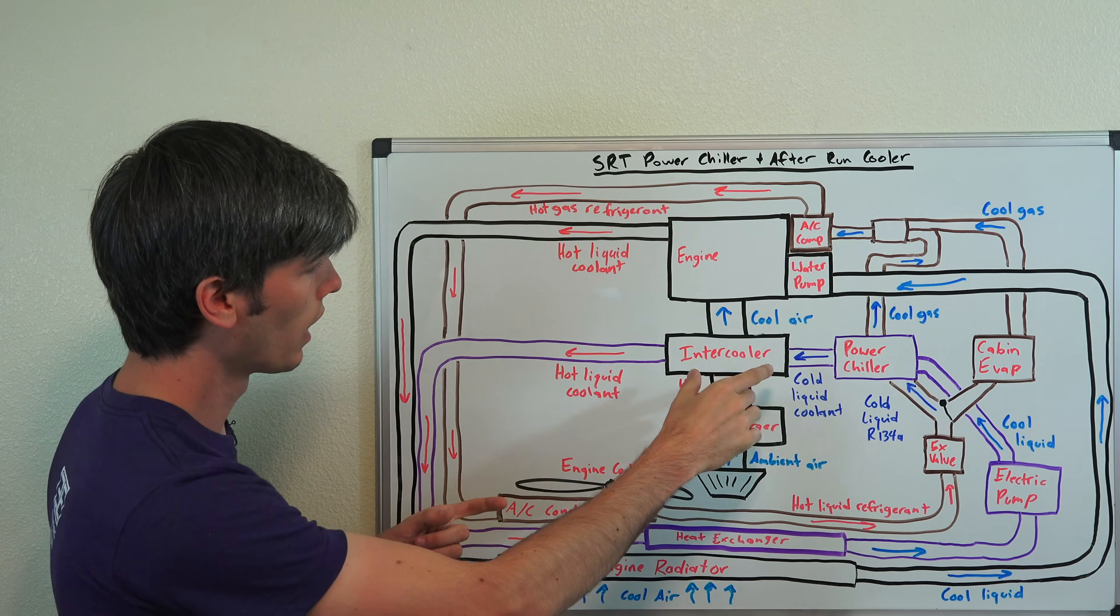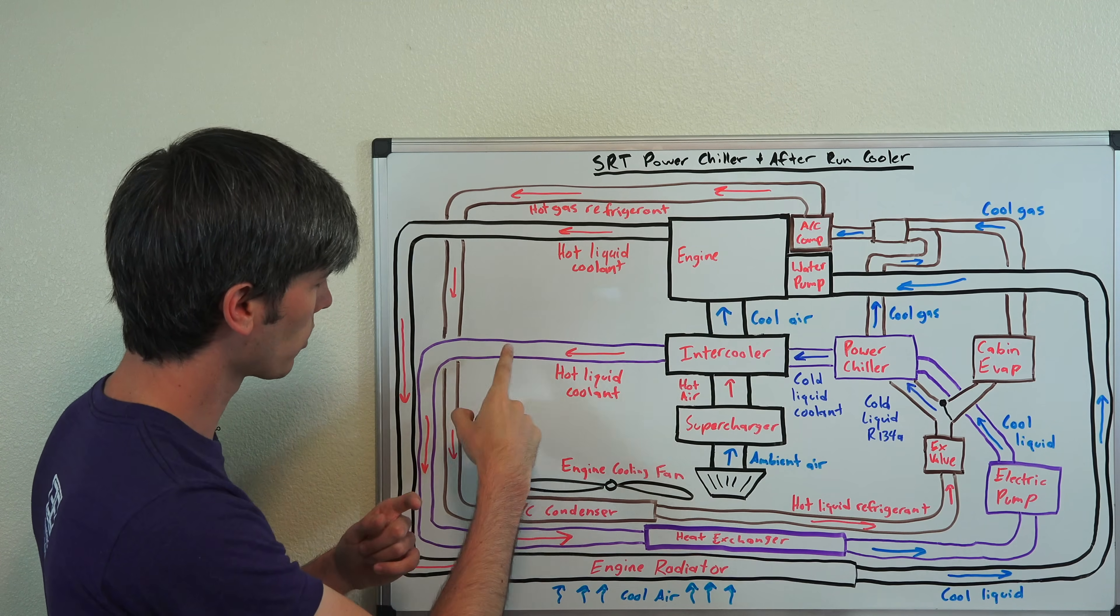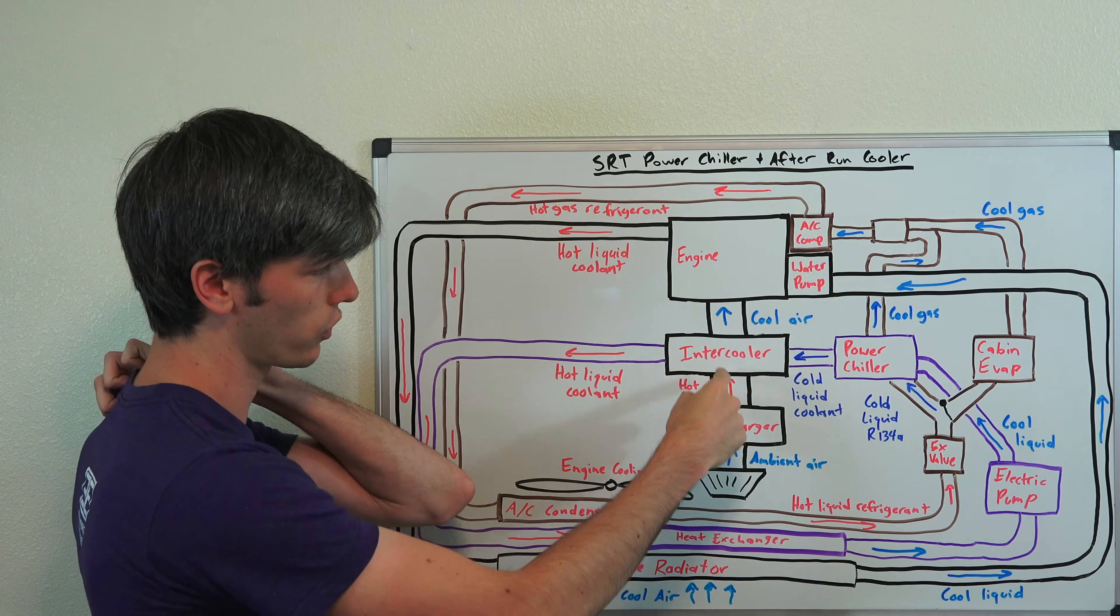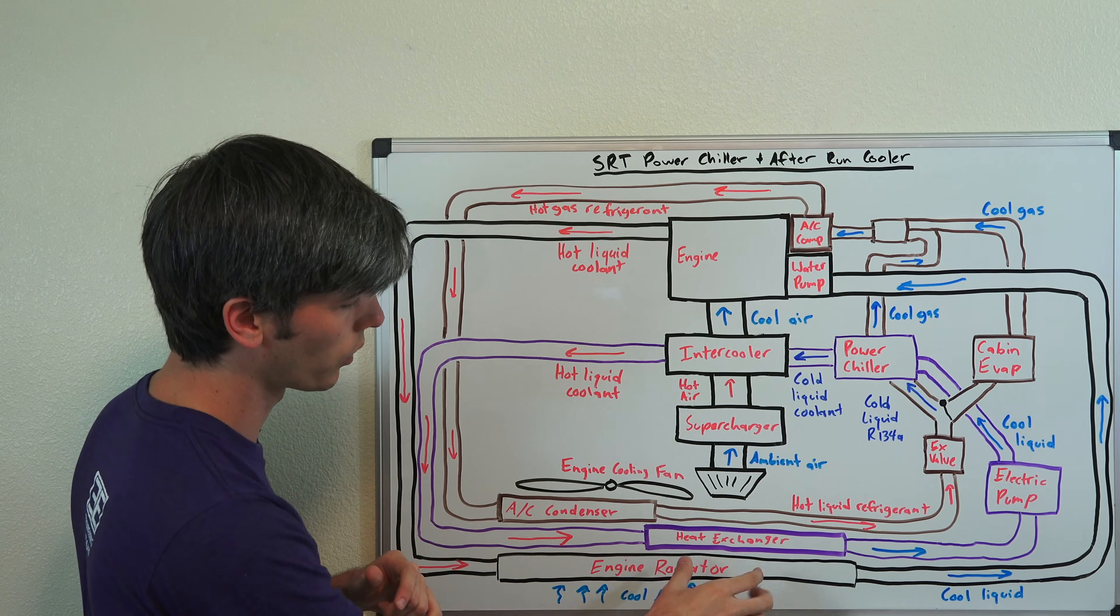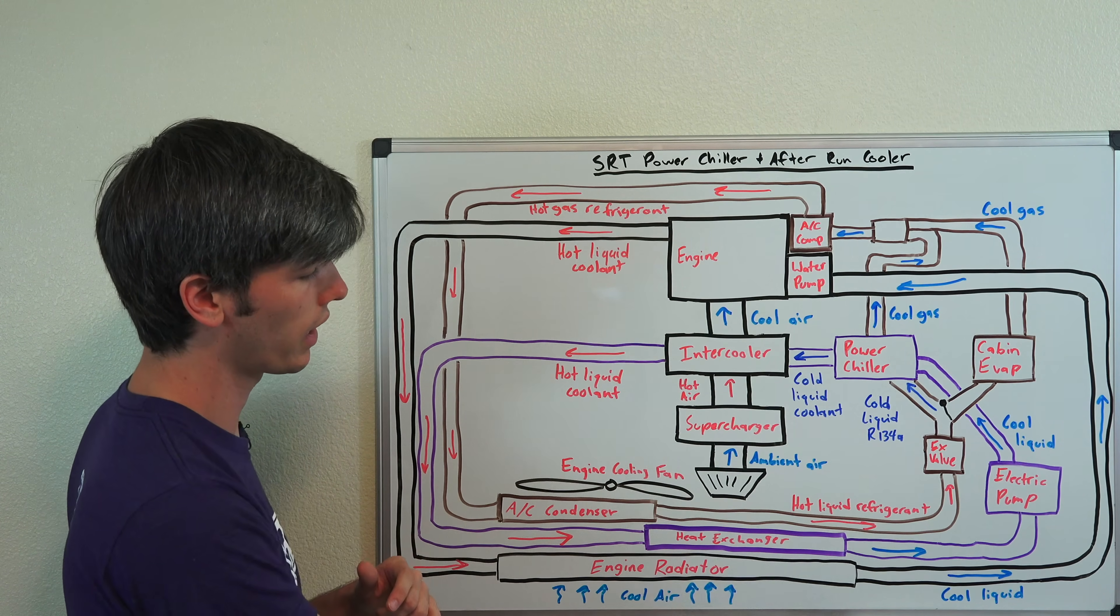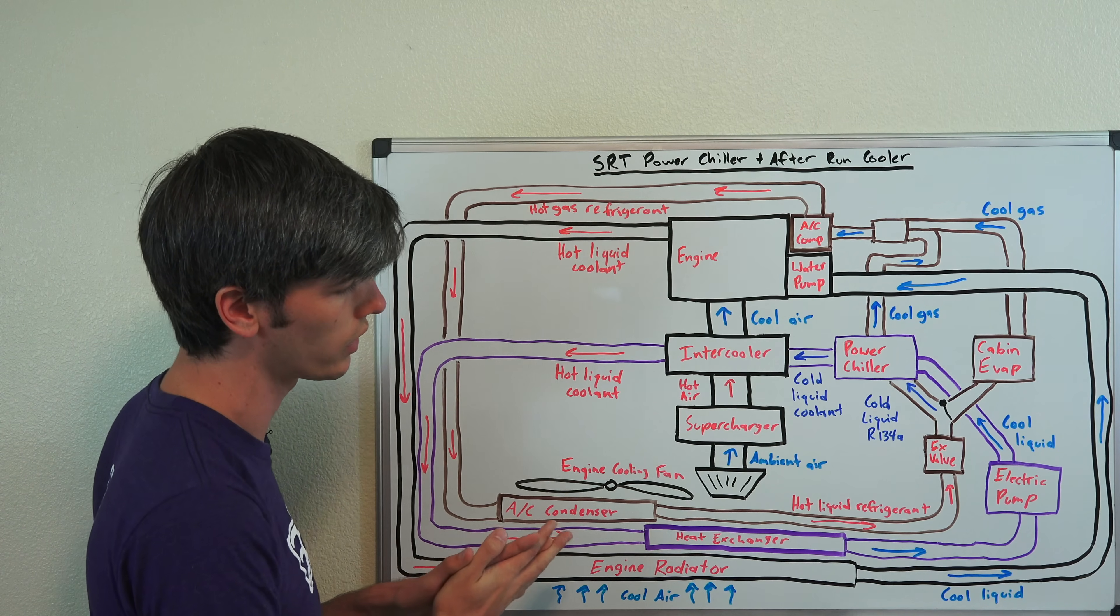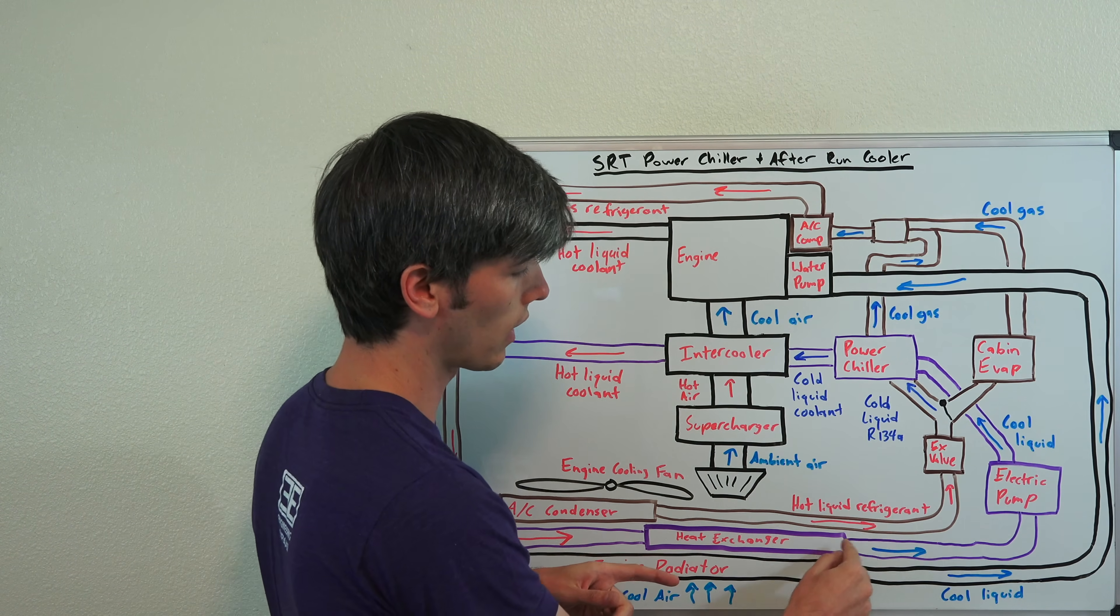And so, that intercooler, you've got your hot liquid coolant after that air is exchanged to cool down the air that's going into the engine. So, the hot coolant comes out, passes through your heat exchanger up front. You've got ambient air passing through that heat exchanger and then that cools it down.